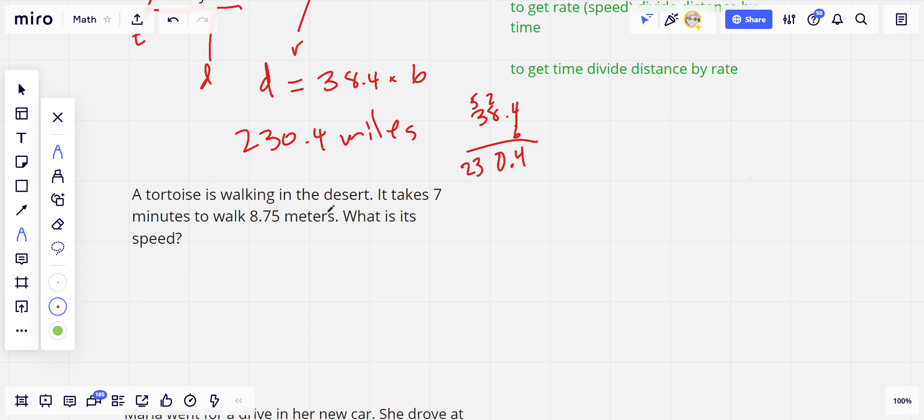It says a tortoise is walking in the desert. It takes 7 minutes, so that looks like time, to walk 8.75 meters - that looks like distance. And we want to know what is its speed. So speed is rate.